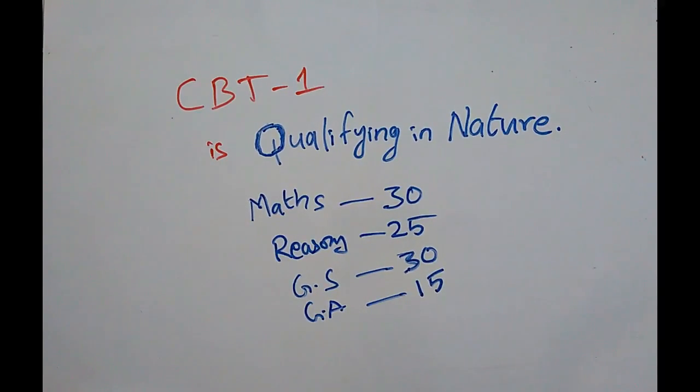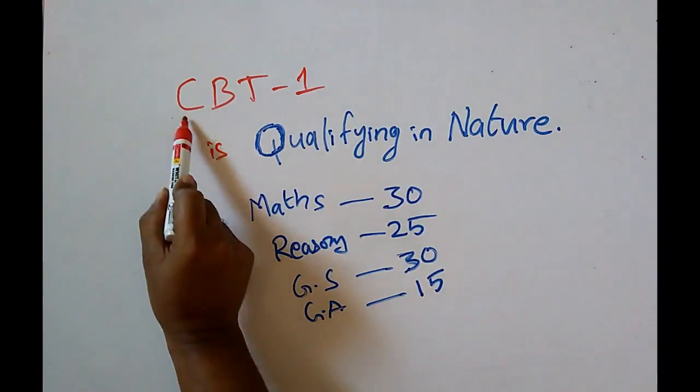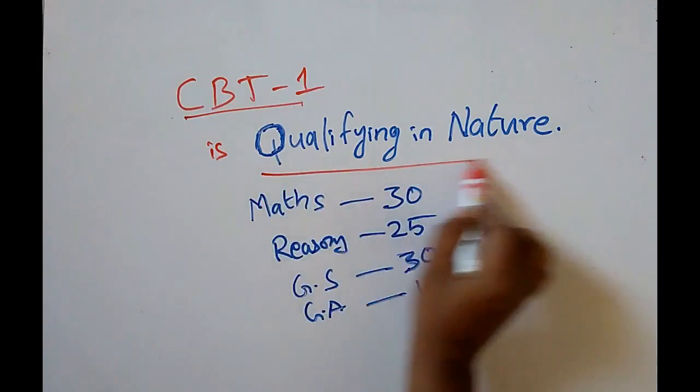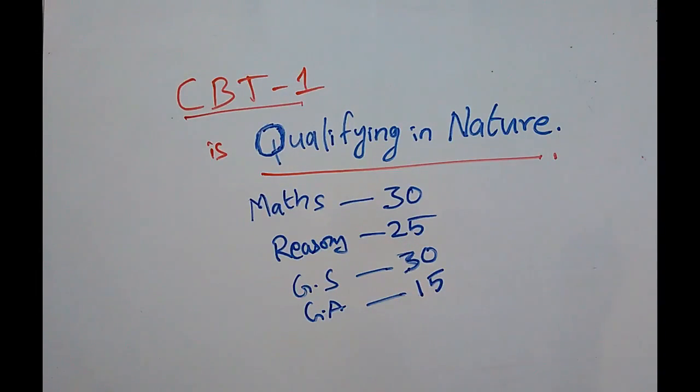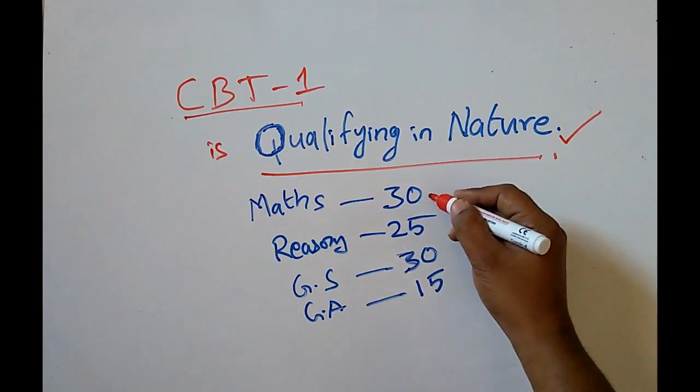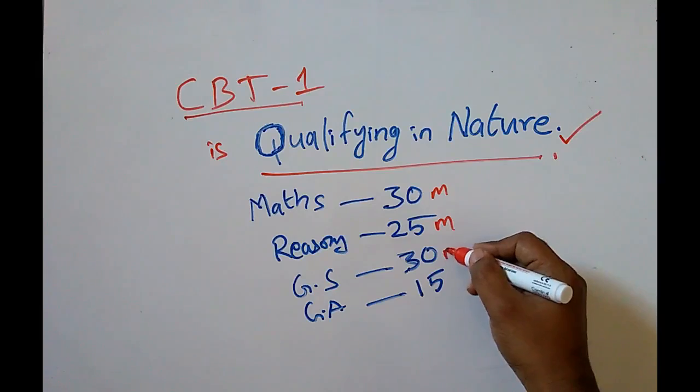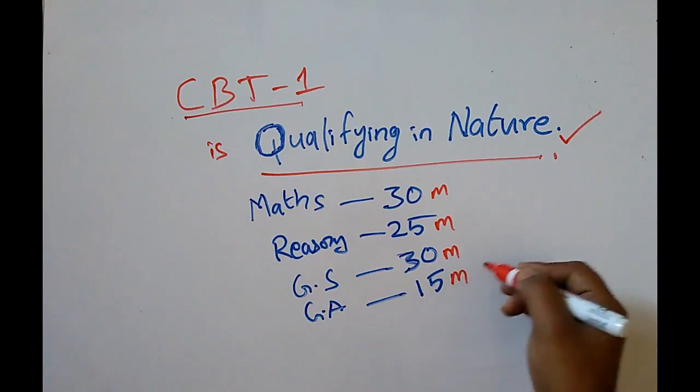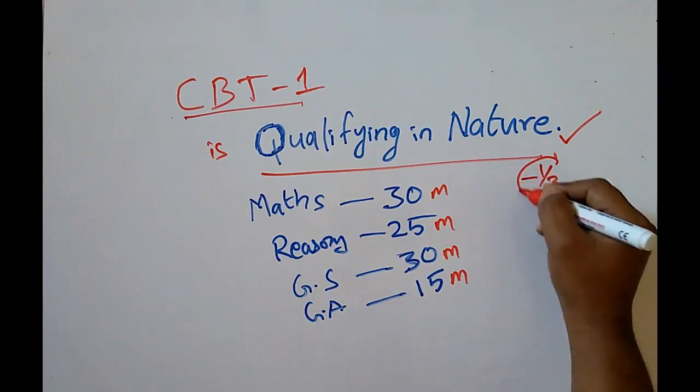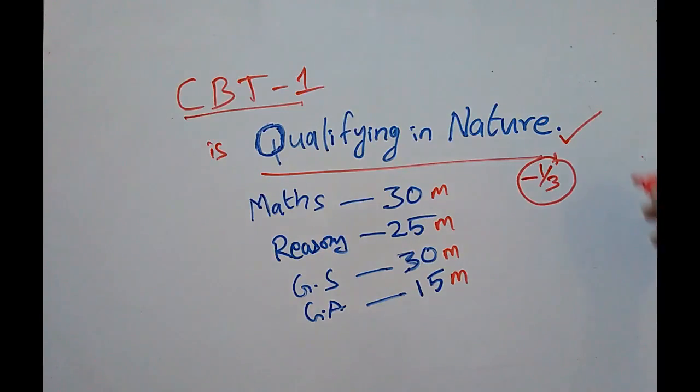As a friend I am suggesting you this: CBT-1 of RRB JE is qualifying in nature. Qualifying in nature means if you get marks above the cutoff, that is enough to enter into the second level. CBT-1 marks are not considered in the final selection. It's just qualifying in nature. The weightage is: mathematics 30 marks, reasoning 25 marks, general studies 30 marks, and general awareness is 15 marks. You have a penalty for wrong answers - you will be deducted 0.33 marks if you make a mistake.